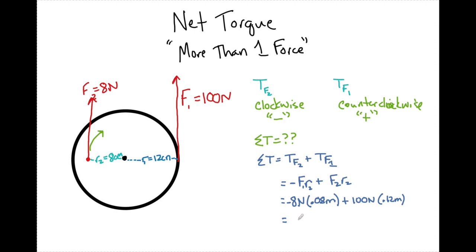And that's all has to be a negative value plus 100 newtons times 0.12 meters. If we simplify this further, we see that this one causes a torque of minus 6.4 newton meters plus 12 newton meters. So that means we have a net torque of plus 5.6 newton meters. And what this plus sign means is it is going to be moving counterclockwise.